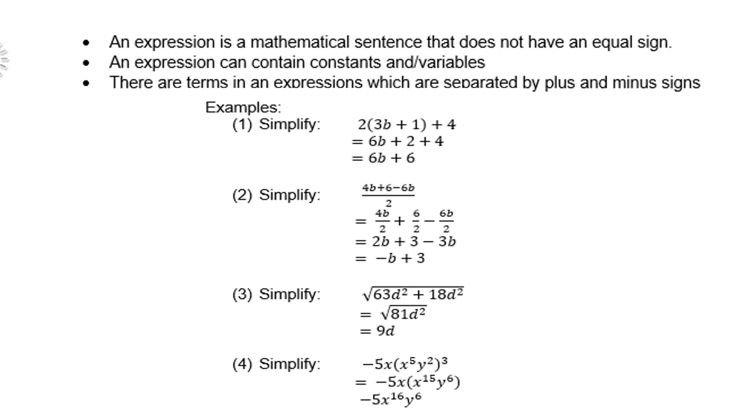-5x(x^5y²)³. Now remember here, you must follow BODMAS, it means brackets first. So you must first multiply 3 with 5 of the x to give you 15, 3 with 2 of the y to give you 6. And now only can we multiply in with -5x. So -5x times x^15 is -x^16 y^6.